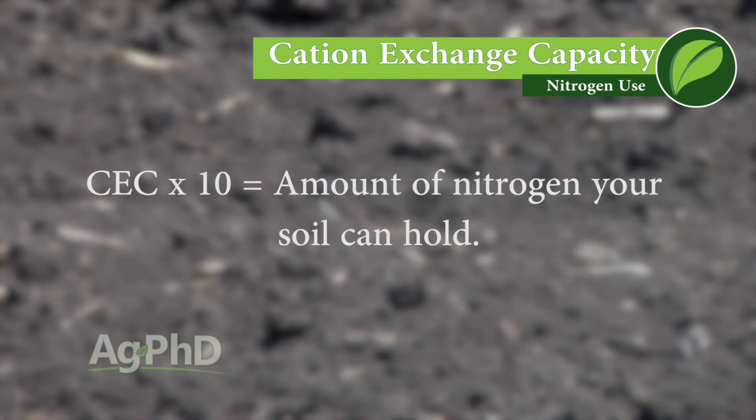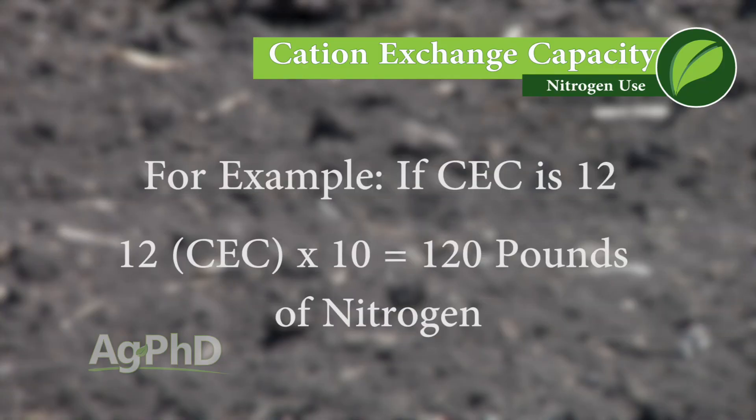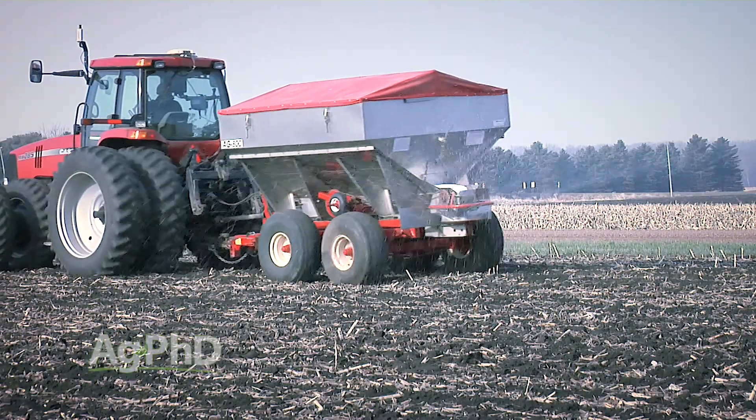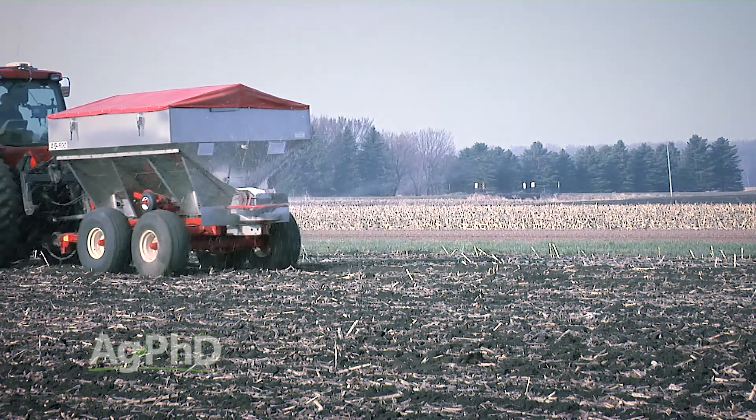What we use cation exchange capacity for in terms of nitrogen management — we talk quite often about nitrogen holding capacity being roughly 10 times your CEC. So if your soil has a 12 CEC, multiply that times 10 and you can hold roughly 120 pounds. That's not an exact number, but it's going to get you relatively close. It's a definite difference from saying 'I want to put 250 pounds of nitrogen on, I have heavy soil.'